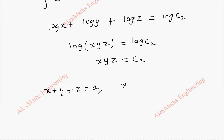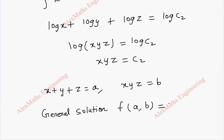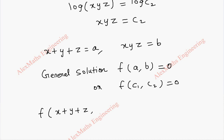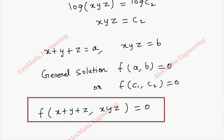So let's take C1 as a, that is x + y + z = a, and C2 as b, that is xyz = b. Our general solution is in the form f(a, b) = 0, which we can also write as f(x + y + z, xyz) = 0. So we have obtained the general solution for the given partial differential equation.